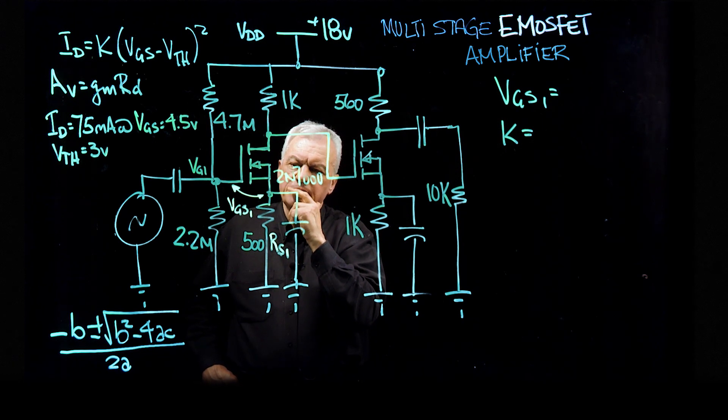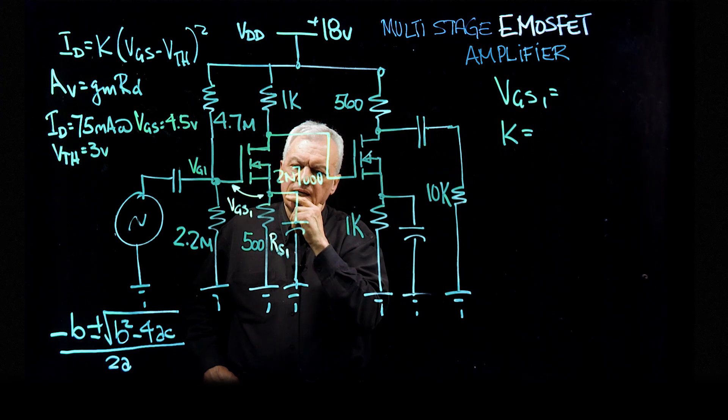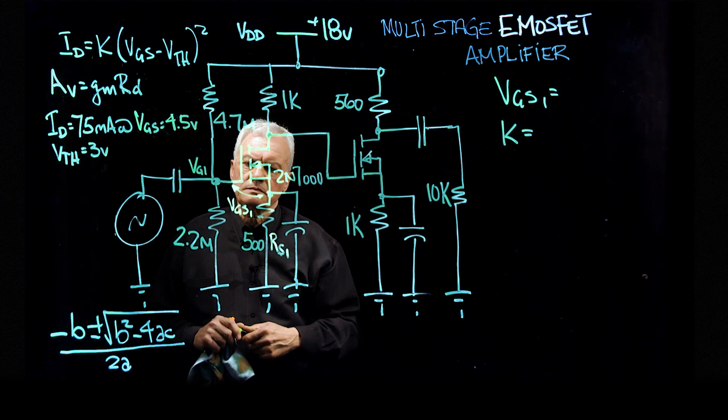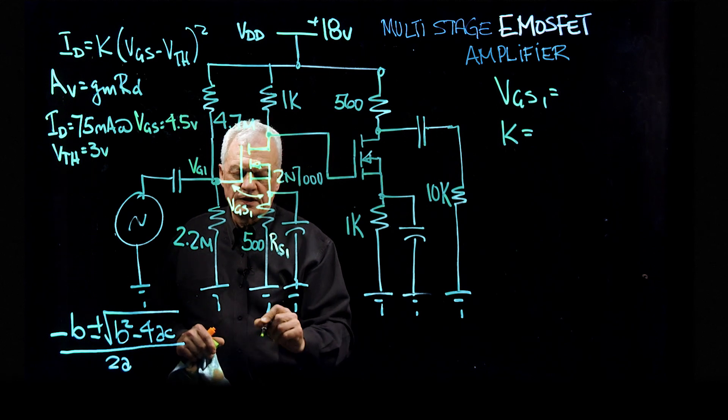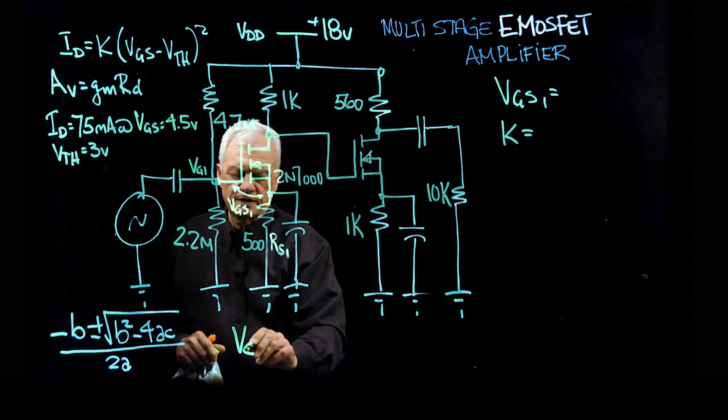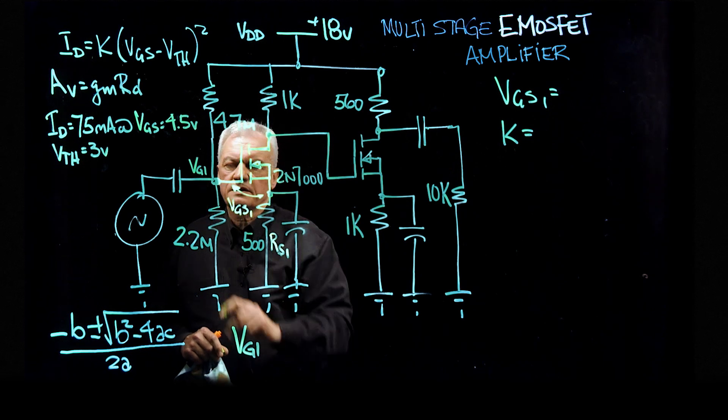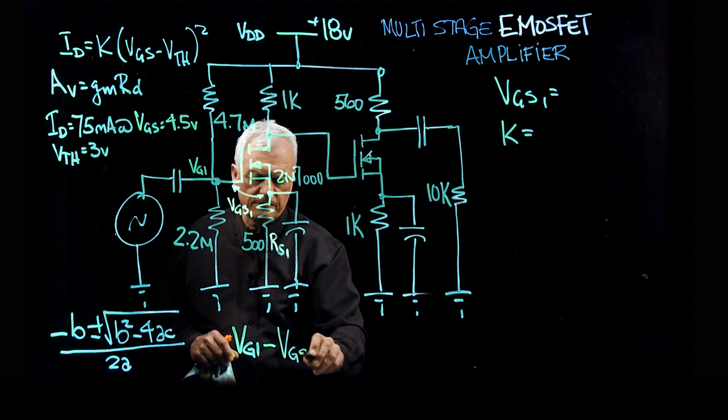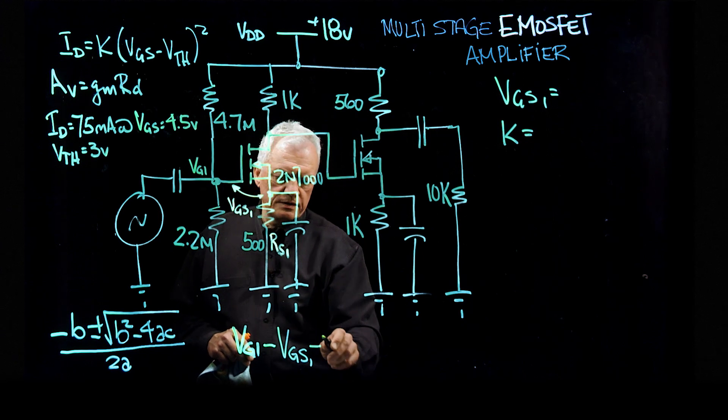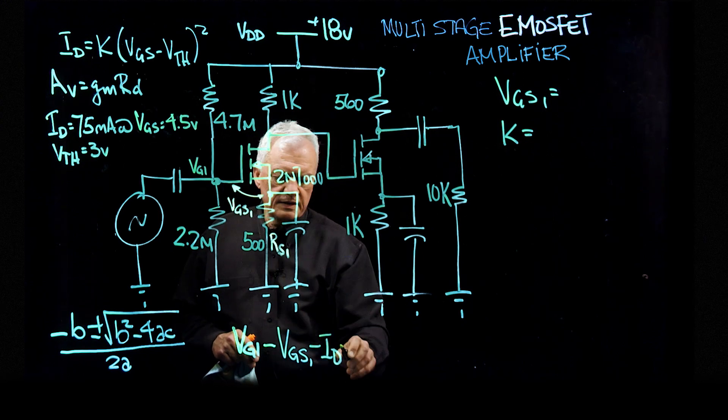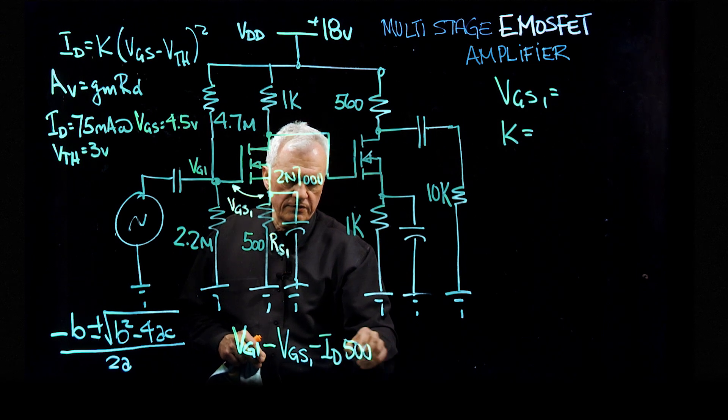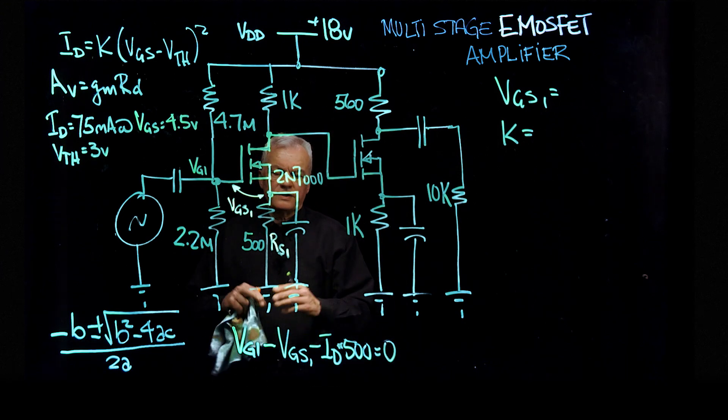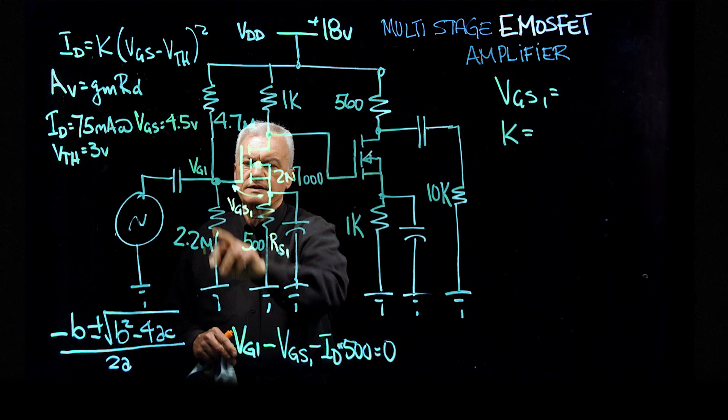So the math for doing this is we're going to go back and look at our friend Kirchhoff and see what he says. He says, let's just take the voltages around the loop and they'll add up to zero. So for example, if we take the voltage VG1 and subtract the voltage gate source for the first transistor, and then subtract the current that we're going to determine through this 500 ohm resistor, that will equal zero. We are then going to have an expression so we can calculate this.